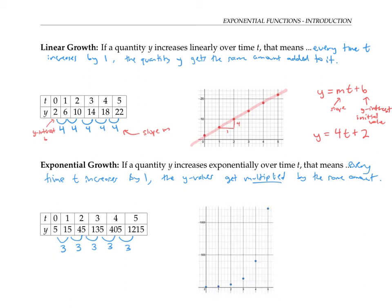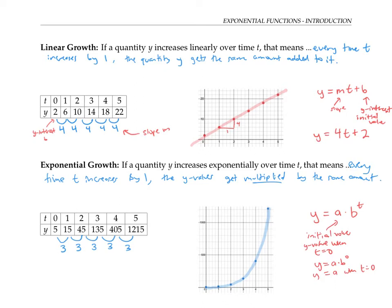Here's what the graph of these points experiencing exponential growth looks like. One way to write the equation for exponential growth is y equals a times b to the t. Here, a represents the initial value — the value when t is equal to zero. That's because if you plug in t equals zero, anything to the zero power is one, so that gives y equals a. It's also the y-intercept. Looking at the numbers, when t is zero, y is five. So our initial value — our a value — for this particular function is five.